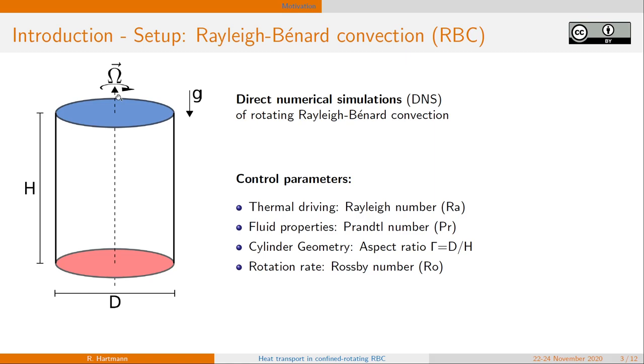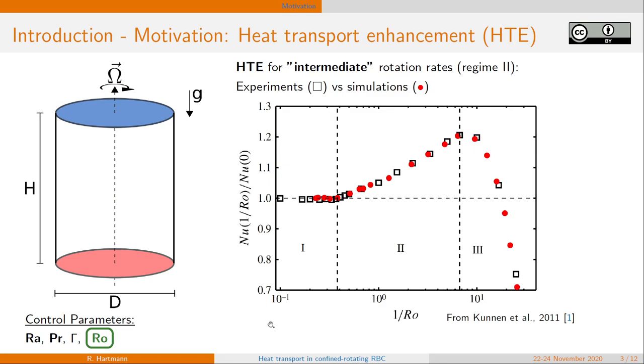This setup is controlled by four dimensionless parameters: the Rayleigh number for thermal driving, the Prandtl number describing the fluid properties, gamma being the aspect ratio of the cylinder, and the Rossby number setting the rotation rate of our system.